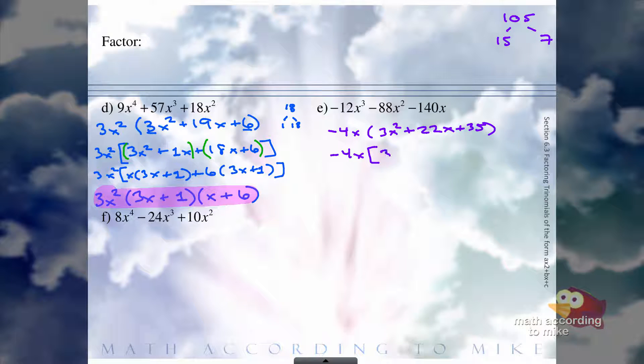So instead of 22X now, we'll say 15X plus 7X. Grouping 2 by 2. From the first group, we can pull out a 3X and we're left with X plus 5. And the second group, we can pull out a 7 and we're left with X plus 5.